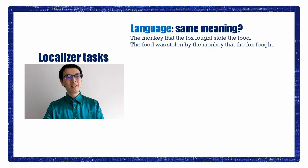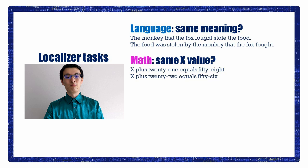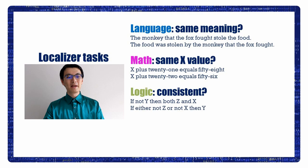Now let's return to our main question. Does code comprehension share neural resources with language, math, logic, or executive control? We asked the same participants to perform several other tasks to localize the canonical neural mechanisms for the four cognitive activities of interest. In a language task, participants reported whether a passive sentence had the same meaning as an active sentence. In a math task, participants reported whether the unknown variable X had the same value in two equations. In a logic task, participants reported whether the truthfulness of one logical statement entailed the truthfulness of another statement.